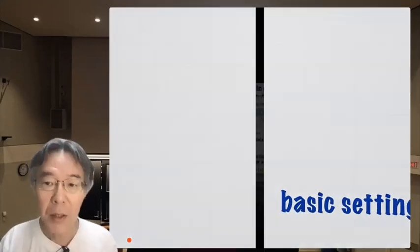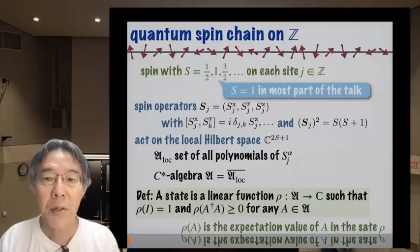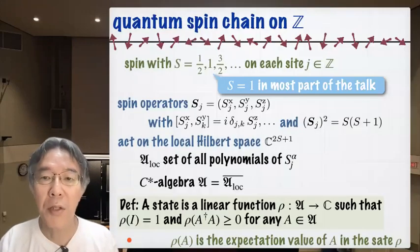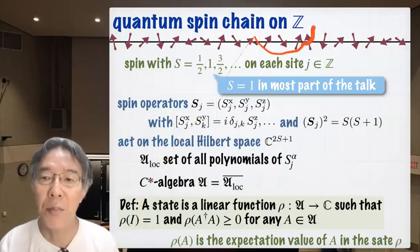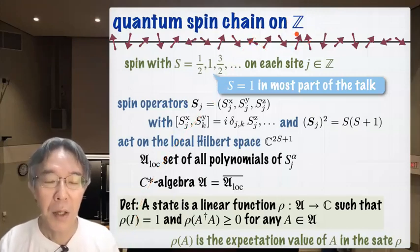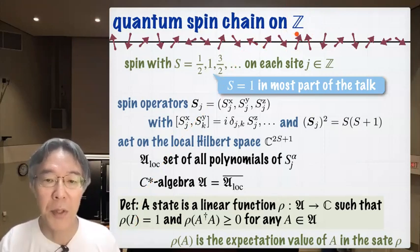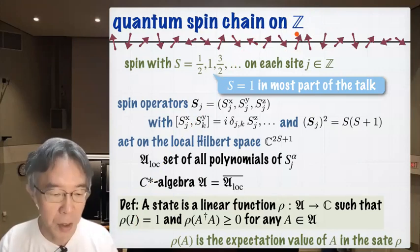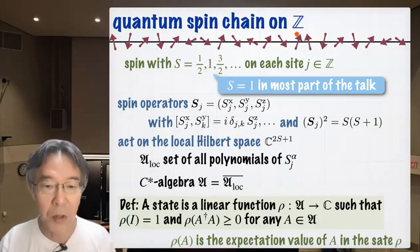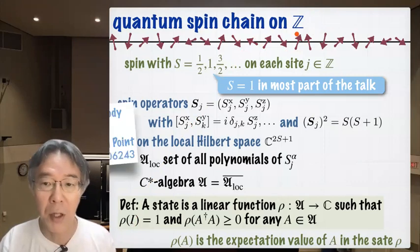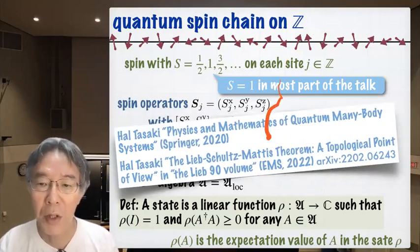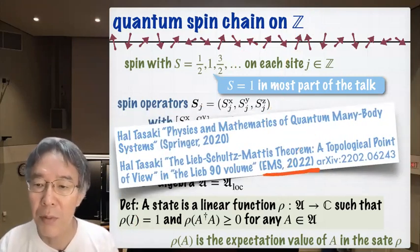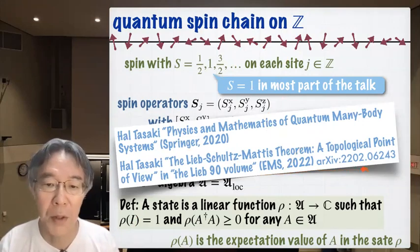Let me start from the basic setting. I will treat a quantum spin system defined on the infinite chain, denoted by Z. Some of you may not be familiar with the treatment of infinite spin systems, but I think this explanation will be enough. If you want more details, I recommend either my book or this review article — both are readable.